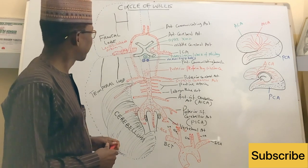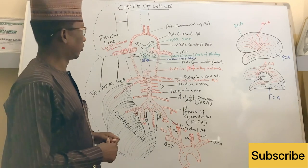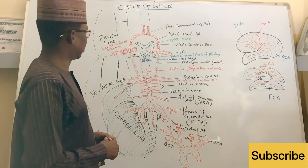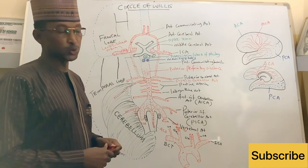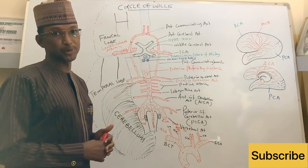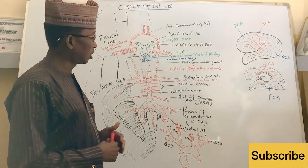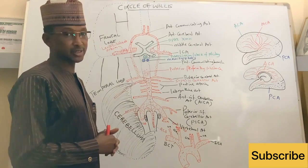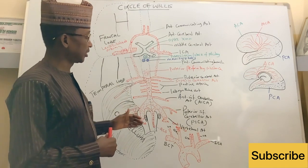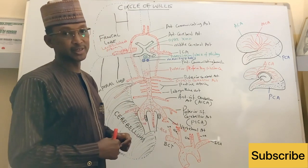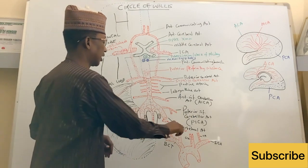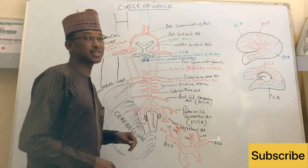Hello viewers, today I'm going to discuss the blood supply to the brain. The blood supply to the brain comes from two major arteries. The first one is the vertebral artery, and the second one is the internal carotid artery.